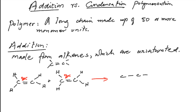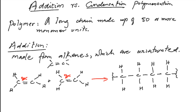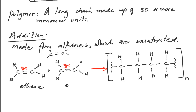What happens now is the molecules join in this manner — we join two of them together. We normally put a squiggly line at the ends, which I call sticky ends, to show we can add more molecules to it. This is what the polymer would look like. So this is an ethene molecule, another ethene molecule, and over here we get polyethene — many ethene molecules joined together.